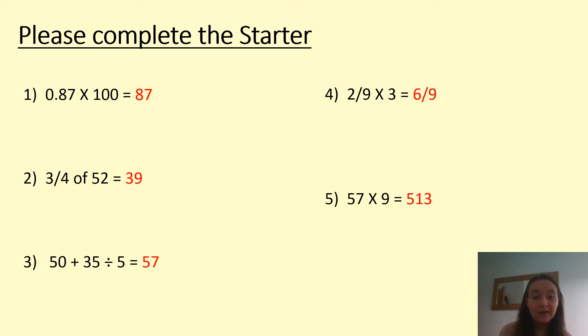For question number four, it's similar to question number two. So what you need to do is times two by three to give you six over nine. And for question number five, this is long multiplication, and that's what we're going to go through now.